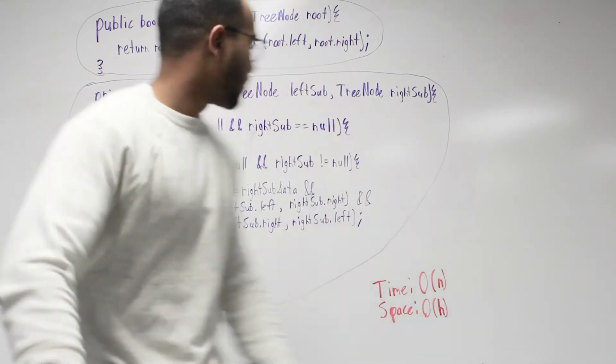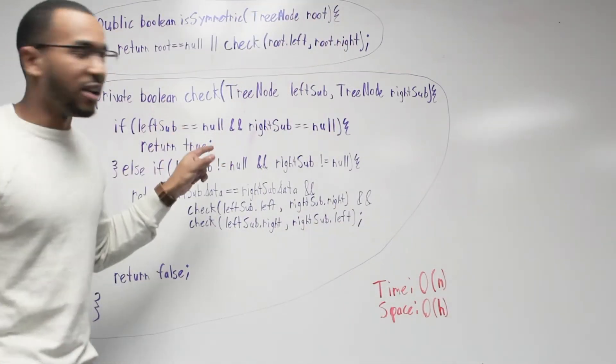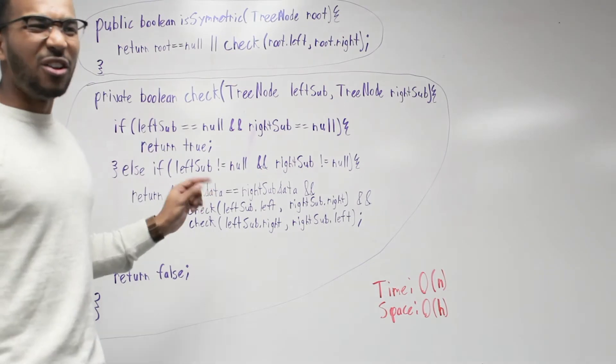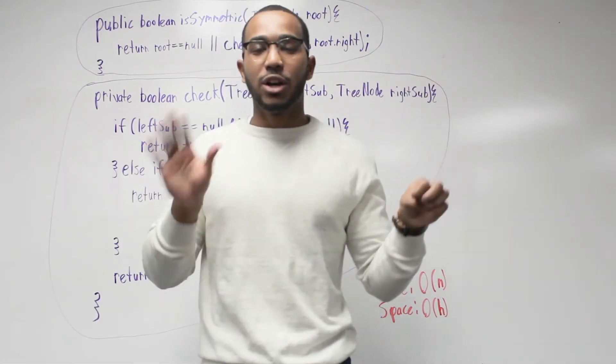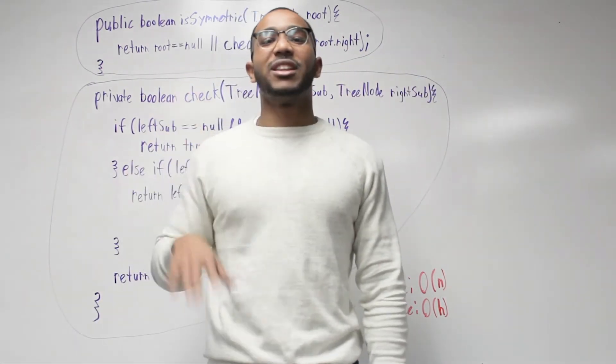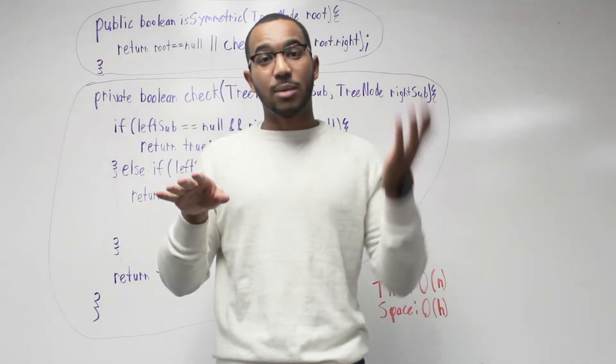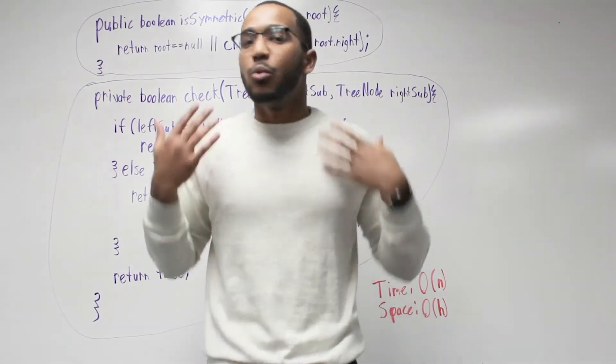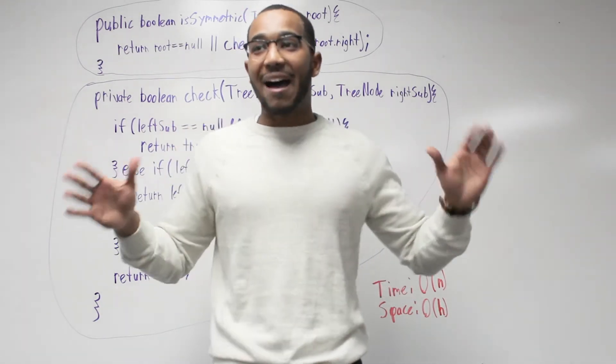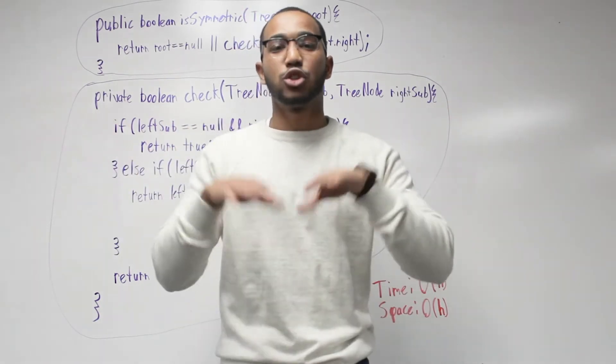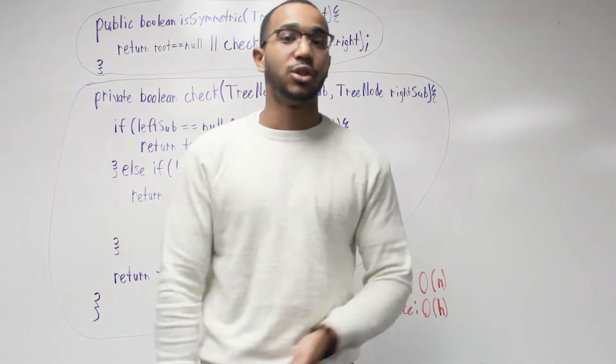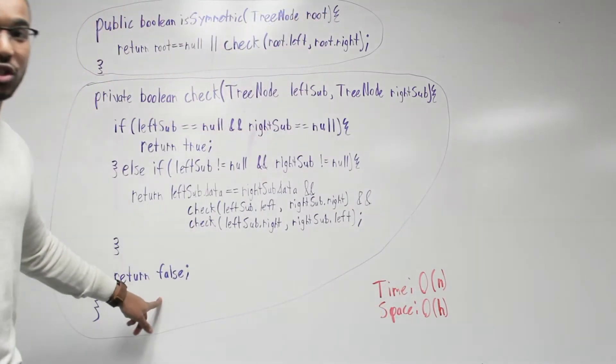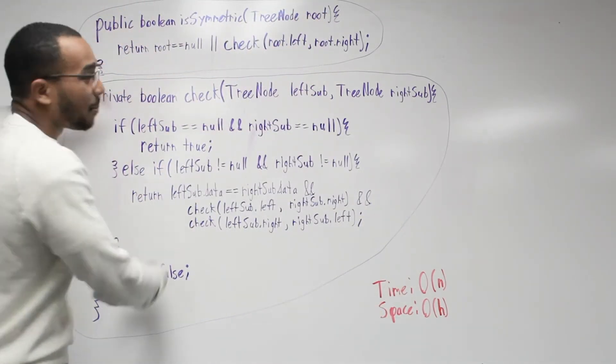When would we reach the return false line? First, we know that both nodes are null. Then we know both nodes aren't null. If one node has a value and one node is null, or if the left subtree has a value and the right subtree is null, or the right subtree has a value and left subtree is null, then it's impossible to have symmetry because they are structurally different. We cannot even do a value check and therefore we return false.